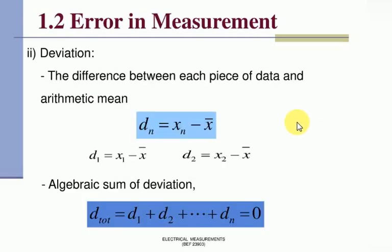Second is deviation. What is deviation? Difference between each piece of data and arithmetic mean. Deviation dn equals xn minus x̄. So d1 equals x1 minus x̄, d2 equals x2 minus x̄. Algebraic sum of deviation: dtotal equals d1 plus d2. Using those two equations you can find the deviation - the difference between each piece of data and arithmetic mean.